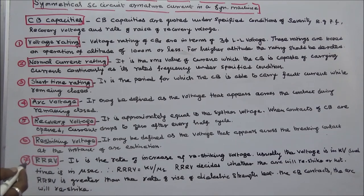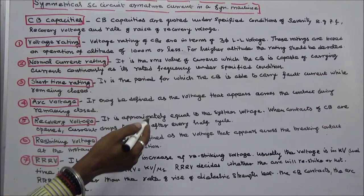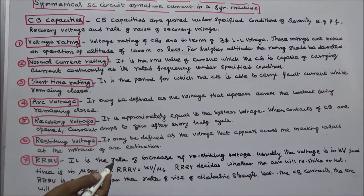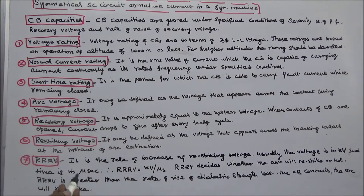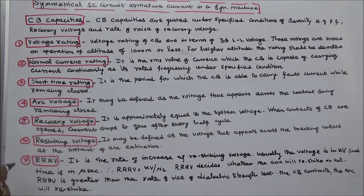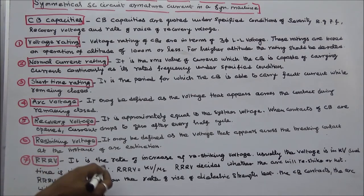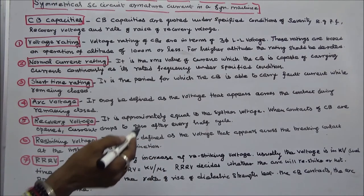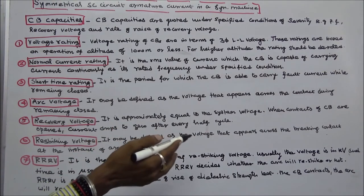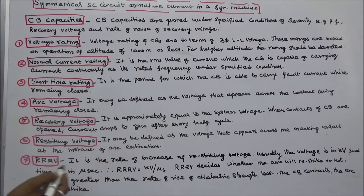Sixth, restriking voltage: it may be defined as the voltage that appears across the breaking contact at the instant of arc extinction. Seventh, rate of rise of recovery voltage (RRRV): it is the rate of increase of restriking voltage. Usually the voltage is in kilovolts and time is in microseconds.